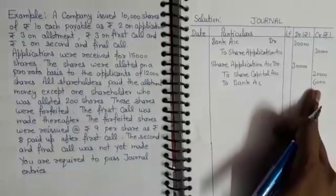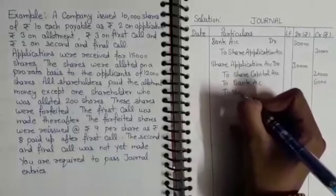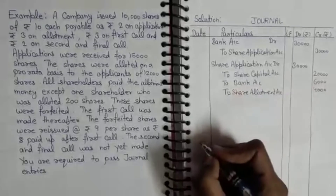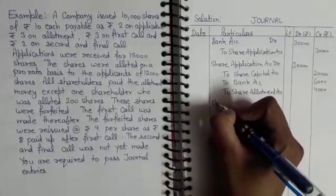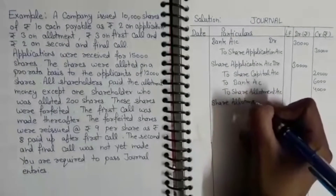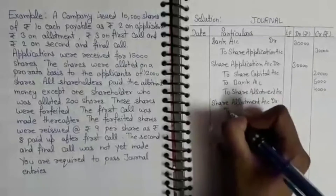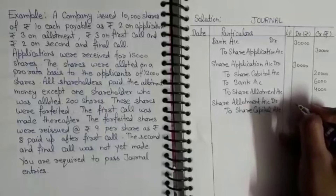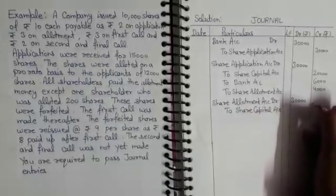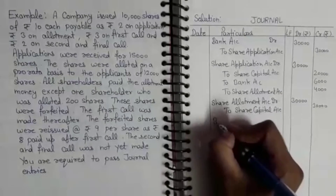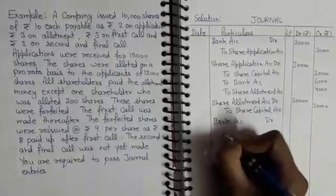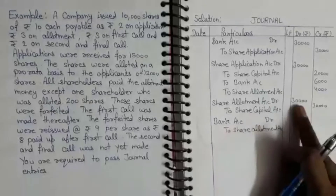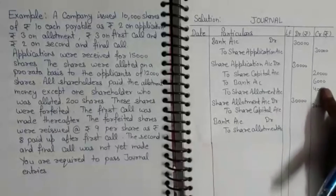₹2 के हिसाब से 3,000 shares का ₹6,000 return कर दिया। अब balance बचा ₹4,000, जो हम Share Allotment में transfer कर देंगे। इसके बाद allotment call मंगानी होती है — Share Allotment Account debit, to Share Capital Account। Allotment पहले due की जाती है, उसके बाद receive होती है। 10,000 shares पे ₹3 allotment = ₹30,000 due। Allotment receive होने पर entry: Bank Account debit, to Share Allotment Account।